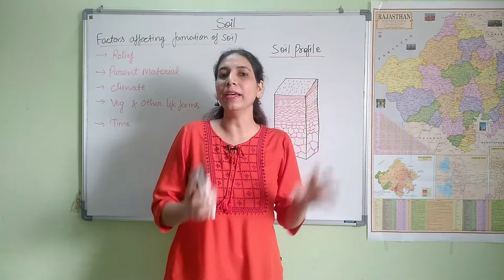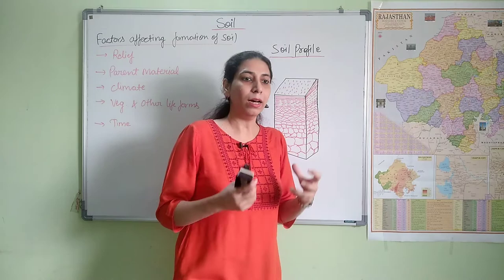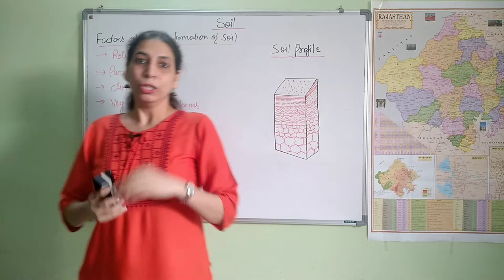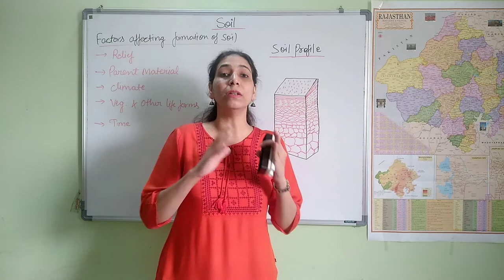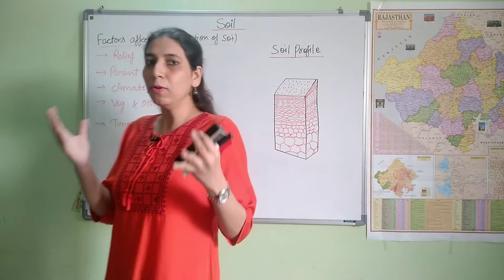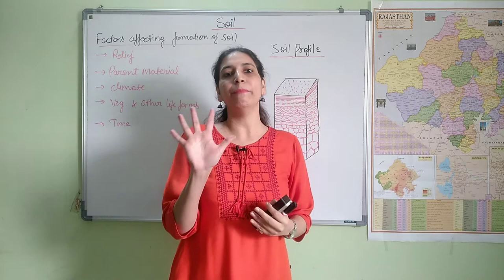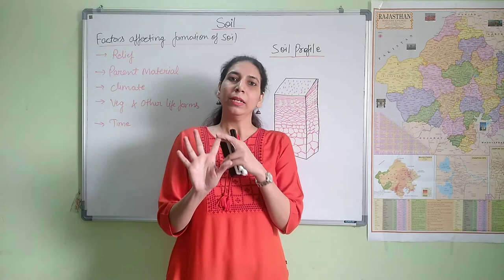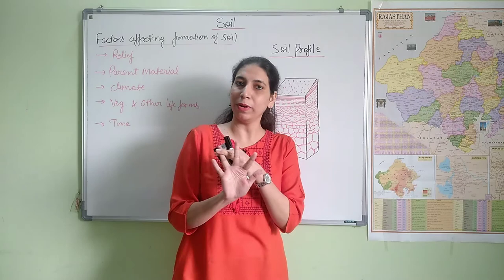Obviously, in some places you have sedimentary rocks, in some igneous rocks, and there are metamorphic rocks as well. So when the parent material is different, different types of soils form in every particular region. All these things actually determine the type of soil. Next, we will see what are the major factors — the major determinants — which help in the formation of soil. There are five main important factors: first is relief, second is parent material, third is climate, then vegetation and organic life, and finally time.